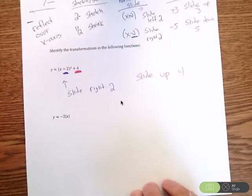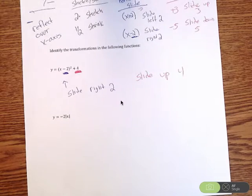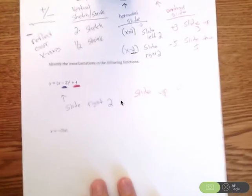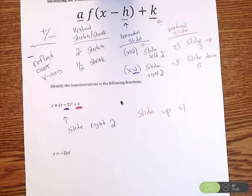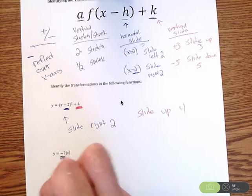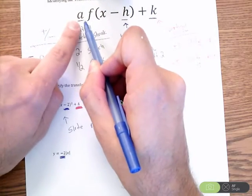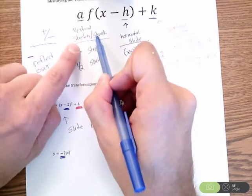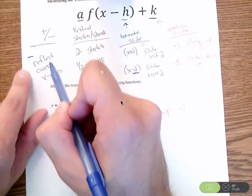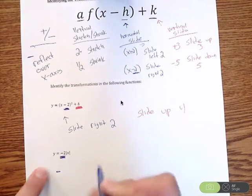One more example is I have y equals negative 2 times the absolute value of x. So again, I want to go back to A, H, and K and look at what numbers are in what place. So I got this negative 2 out front is what I'm focusing on. I look at this, I have, you can think of the absolute value as kind of a parentheses, a grouping symbol. So I have a number out front. Well, that would be A. So A is going to be a vertical stretch and shrink. And if I have a positive or negative, that's going to reflect it.